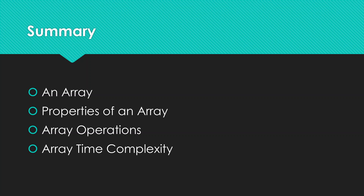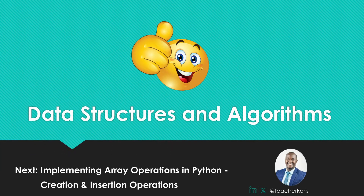That is it for this topic. We've learned that an array is a special type of variable that stores items of the same type. We looked at properties like fixed size and contiguous memory storage. We covered array operations like insertion, deletion, and traversal, and their time complexities. In the next video, we'll get our hands dirty with Python by implementing array operations — the first lab will be array creation and insertion. Thank you so much and see you in the next video.